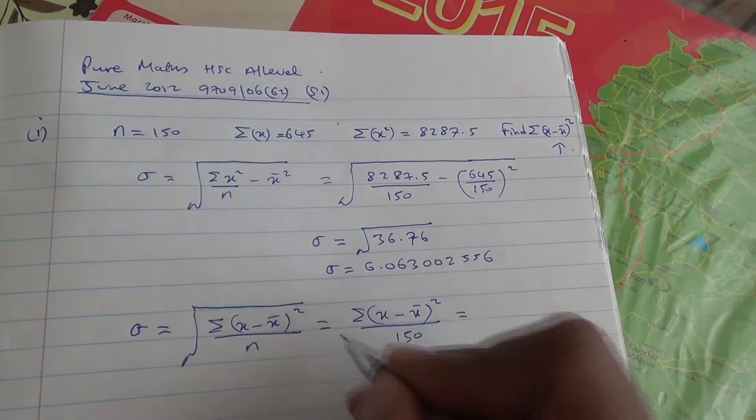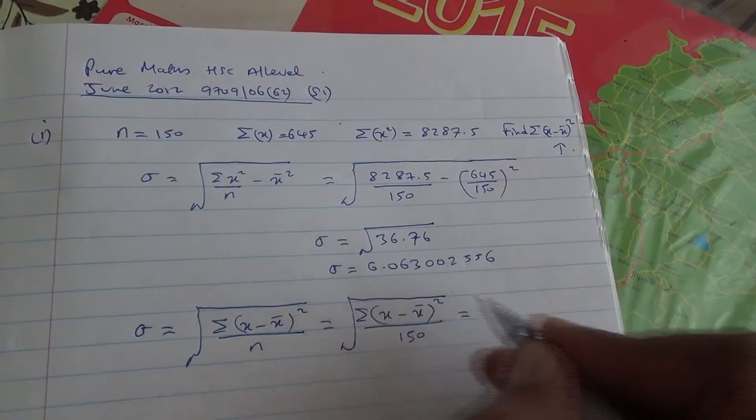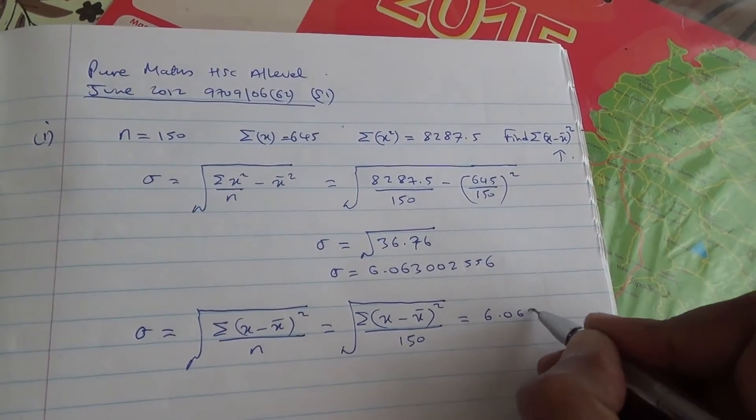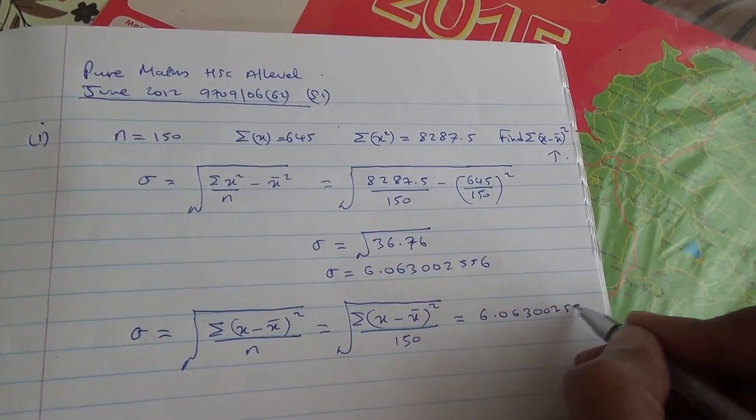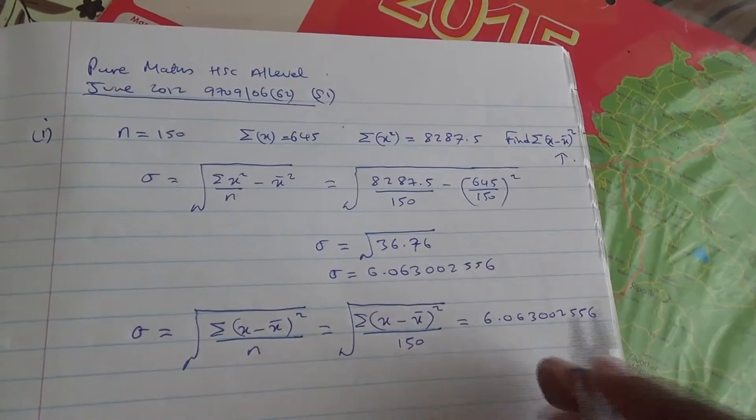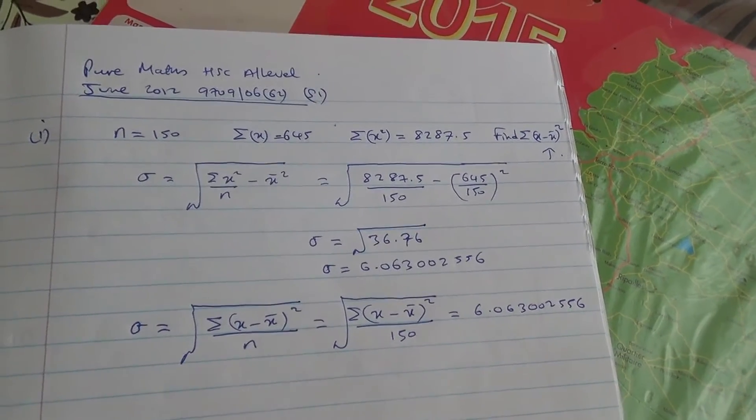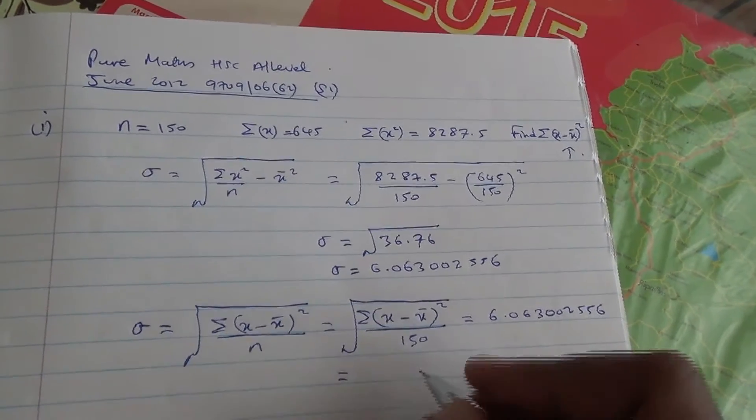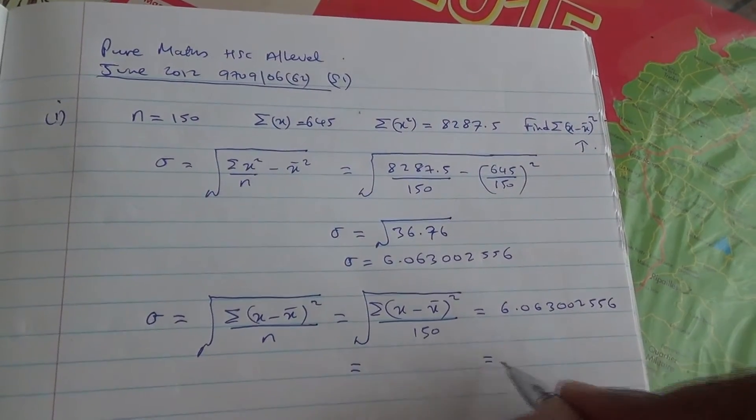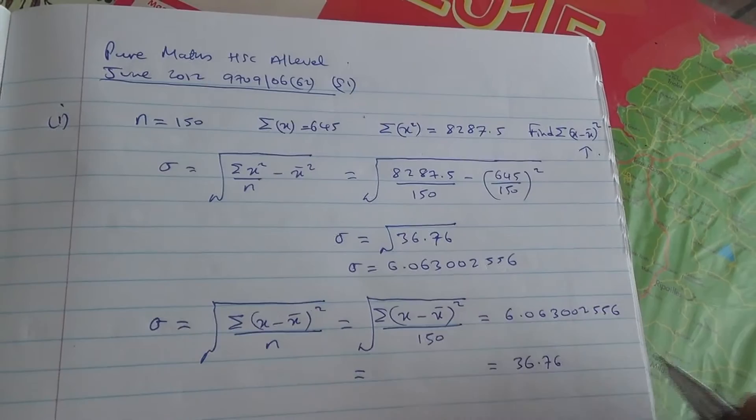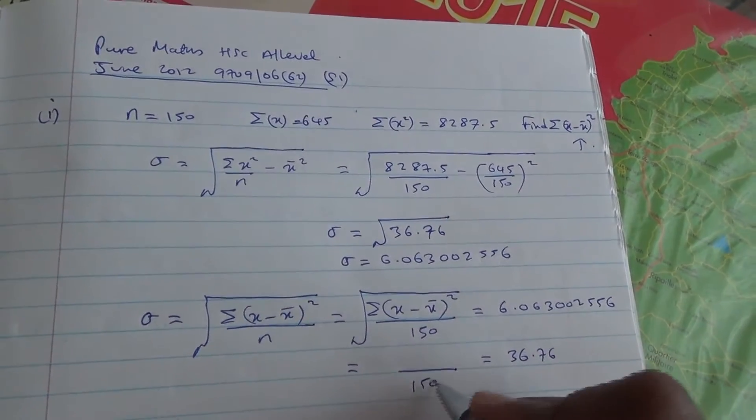and if you take the square root of that, and it's going to be 6.063002556, you square that again, OK, and you're going to come back to what it was. That is, that's going to be 36.76, divided by 150,